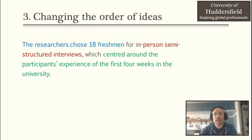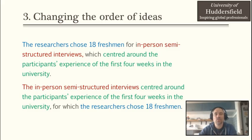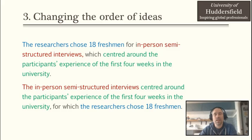The third strategy is changing the order of ideas. I highlighted the different ideas with different colours in this example so you can see how the order of ideas was changed. So we had: the researchers chose 18 freshmen for in-person semi-structured interviews, which centred around the participants' experience of the first four weeks at the university. Now you can change this to: the in-person semi-structured interviews, for which the researchers chose 18 freshmen. Again, you're changing the ideas, and combining this with the previous two strategies, your result will be really different from the original text.